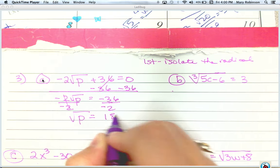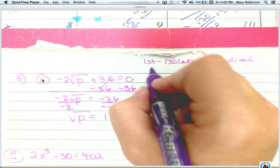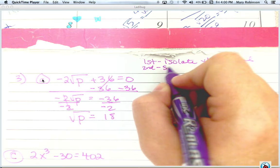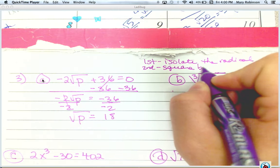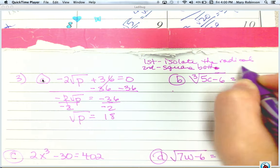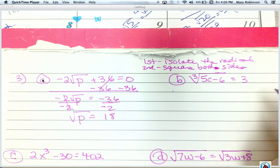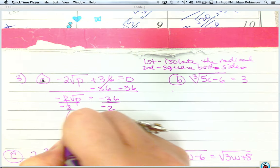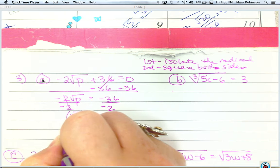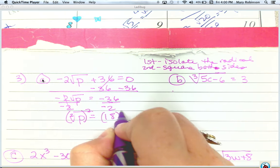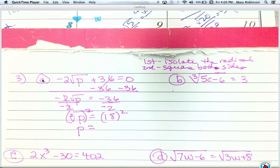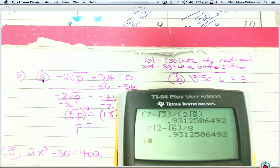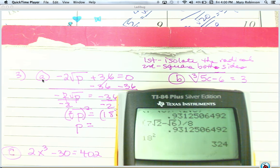And that will give us positive 18. Now that it's isolated, our second step is to square both sides. And we actually raise both sides to the power of the index, so this is 2, understood 2, so I'm going to square both sides. So we get p equals 18 squared, which is 324.